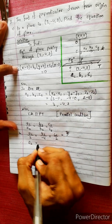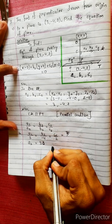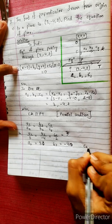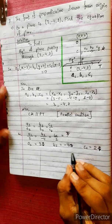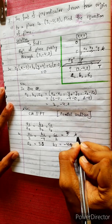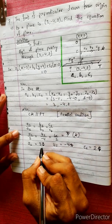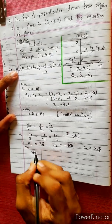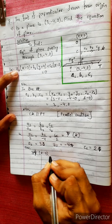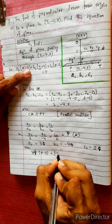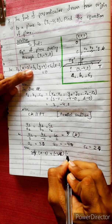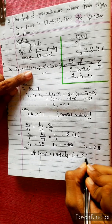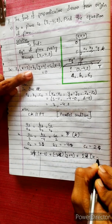Suppose we have a constant number k. Therefore, a1 equals to 3 times k, b1 equals to minus 4 times k, c1 equals to 2 times k. Substituting into the equation: 3 times (x minus 3) plus minus 4 times (y plus 4) plus 2 times (z minus 2) equals to 0.